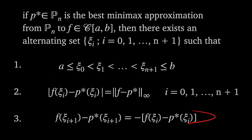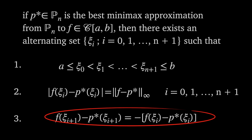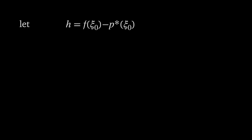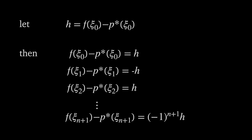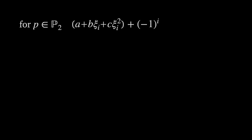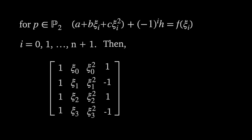The crucial part of the exchange algorithm comes from the third part of the characterization theorem — the changing sign of the error at the alternating set. Let h be the error at ξ₀; then the error at ξ₁ will be -h, at ξ₂ will be +h, and so on. Knowing this, we can set up equations: for p in P₂, we have a + b·ξᵢ + c·ξᵢ² + (-1)ⁱ·h = f(ξᵢ), where a, b, and c are the polynomial coefficients and (-1)ⁱ gives the alternating sign of the error h.